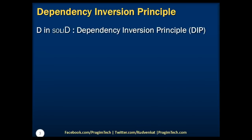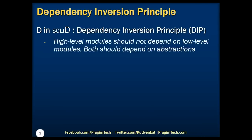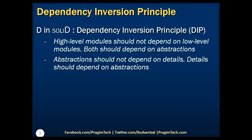The Dependency Inversion Principle, introduced by Robert C. Martin, states that high-level modules should not depend on low-level modules, but both should depend on abstractions. It also states that abstractions should not depend on details, but details should depend on abstractions.